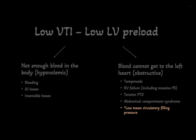The one cause that fits under distributive shock but is still due to an inability for blood to enter the heart is a low mean circulatory filling pressure. In distributive shock, blood can pool in the extremities leading to a low stress volume. In patients who require higher filling pressures to fill their heart, such as those with diastolic dysfunction, this low filling pressure can result in inadequate venous return to the heart. This presents as a low VTI and the treatment is correcting the vasoplegia through vasopressors rather than administering fluid.